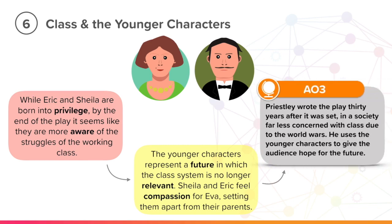This links to AO3, where you get marks for tying context into a play's characters and themes. Priestley wrote the play 30 years after it was set, in a society far less concerned with class due to the world wars. Because of the severity of the wars, they acted as a sort of leveller, meaning that people began to see each other in a more equal, more human way. Priestley uses the younger characters to give the audience hope for the future.